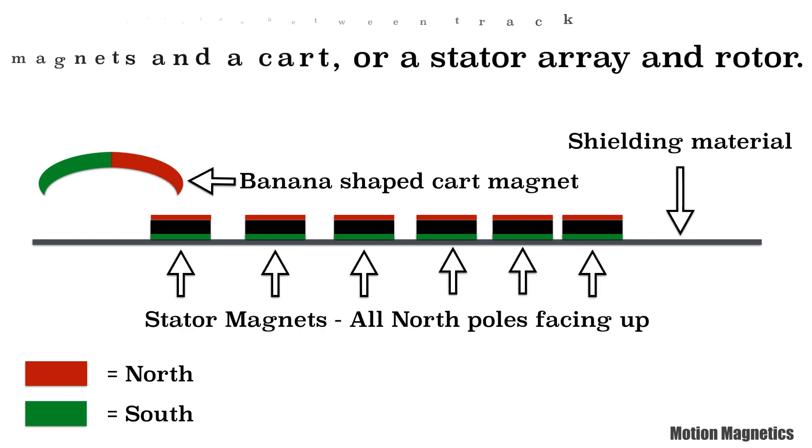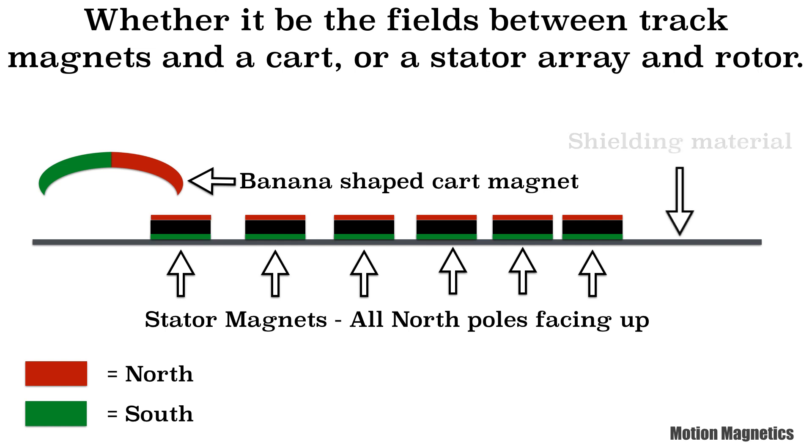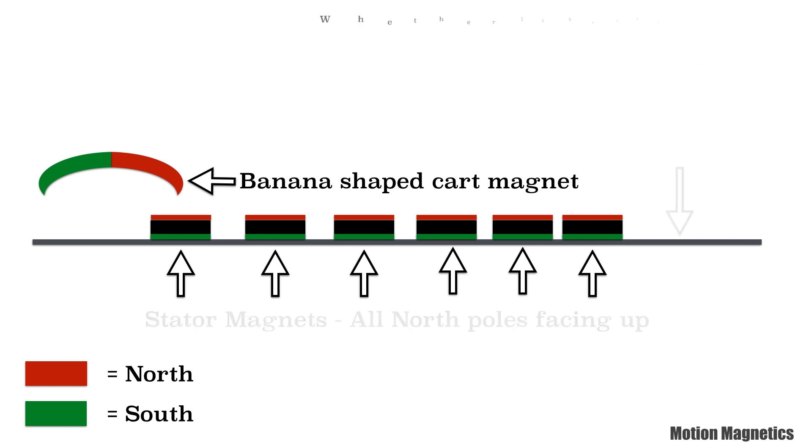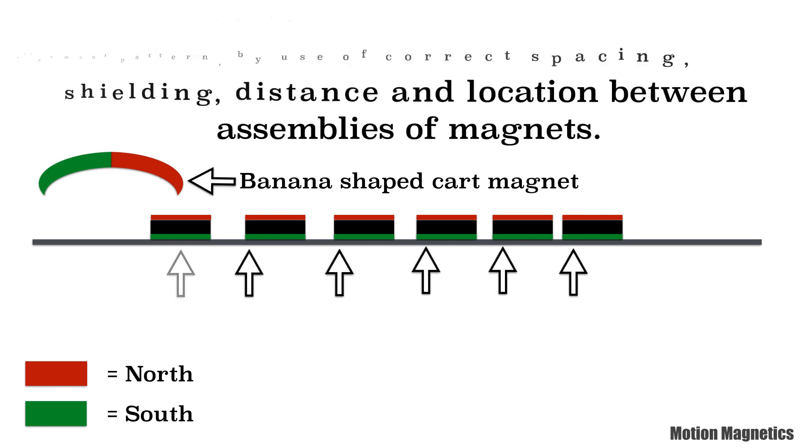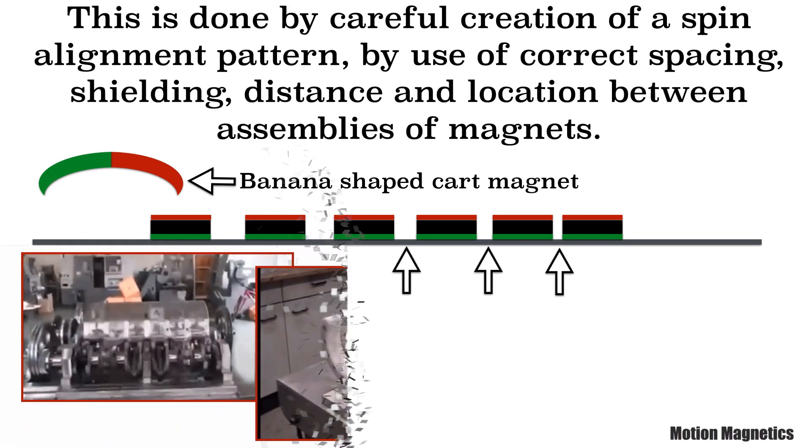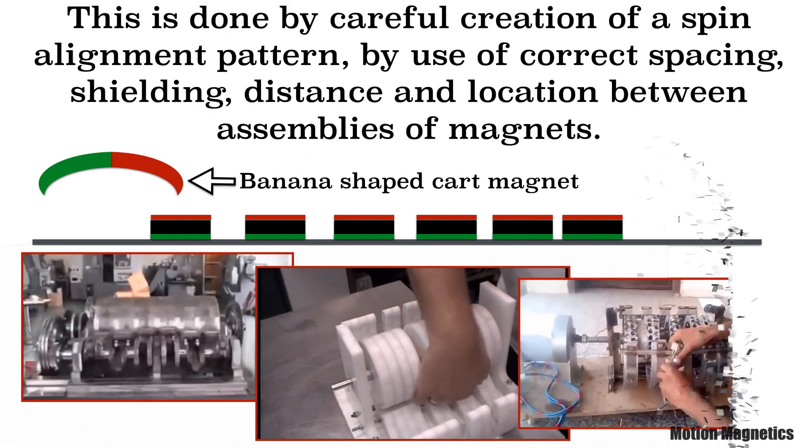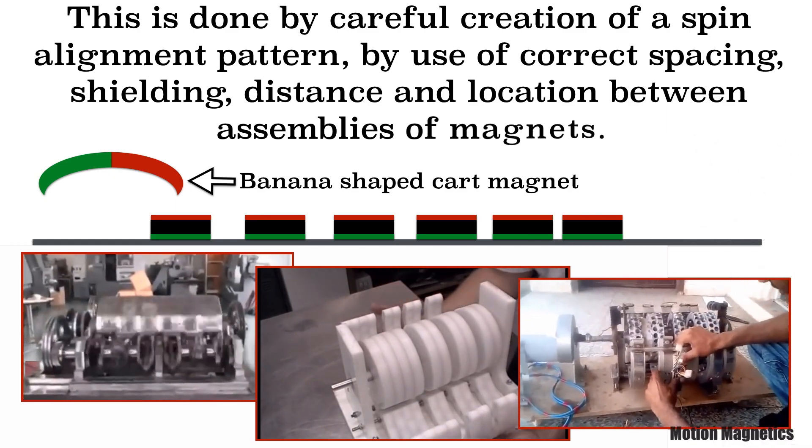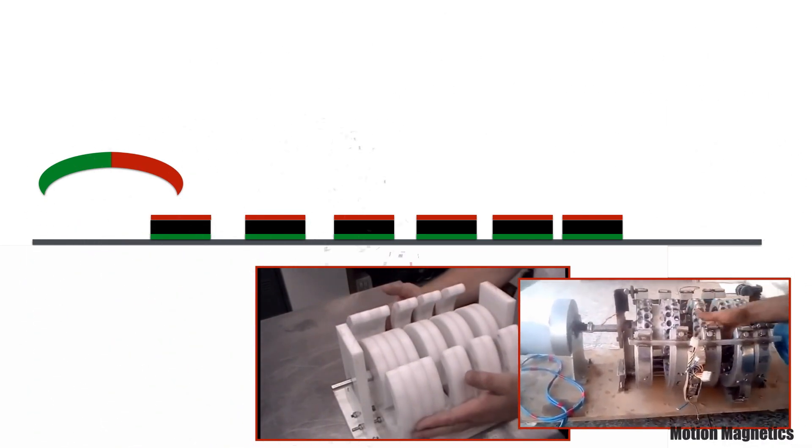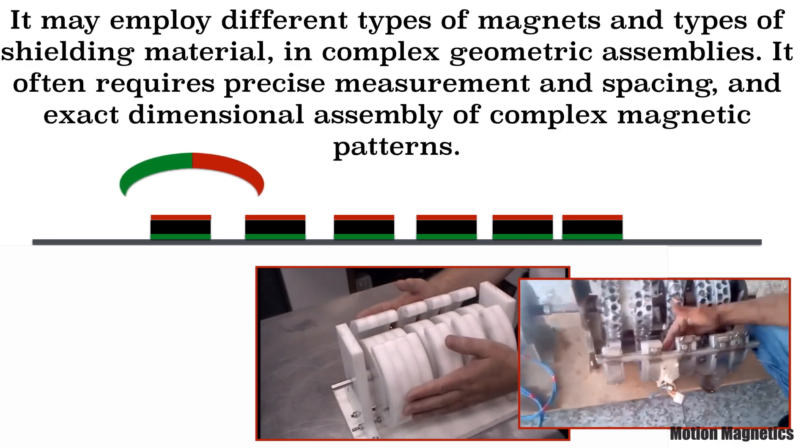Whether it be the fields between the track magnets and a cart, or stator array and rotor. This is done by careful creation of spin alignment patterns by use of correct spacing with shielding, distance and location between the assemblies of magnets. It may employ different types of magnets and types of shielding material in complex geometric assemblies.